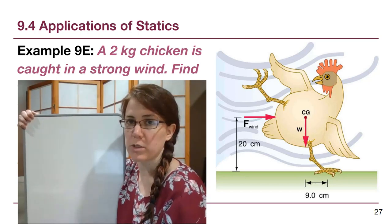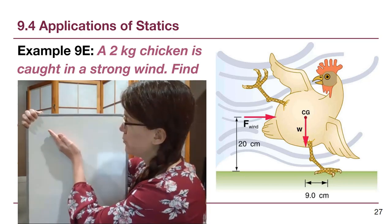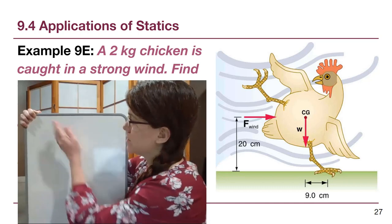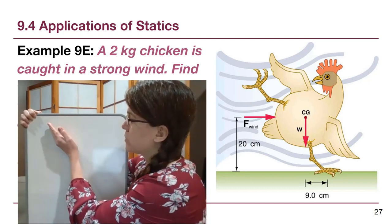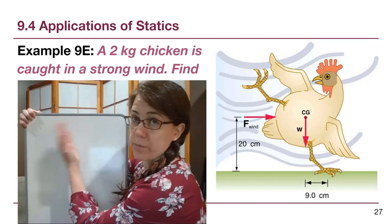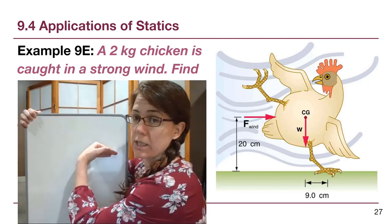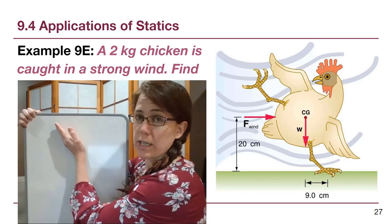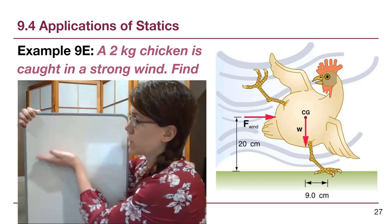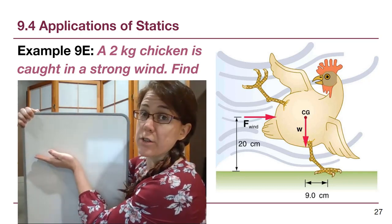And if the wind dies down with the chicken angled like this, then the chicken will fall under the ground the other direction.